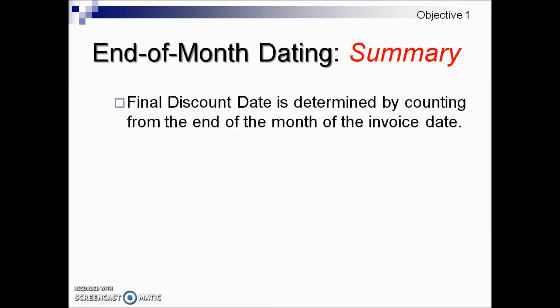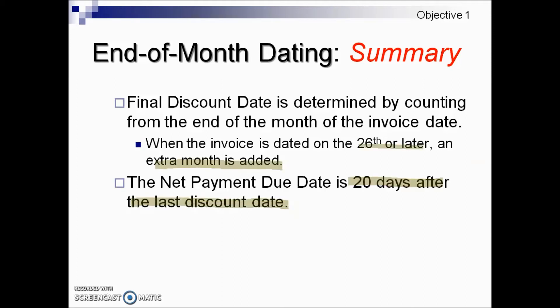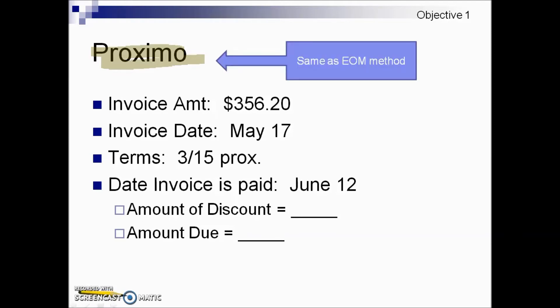In summary, the final discount date is determined by counting from the end of the month of the invoice date. If the invoice is dated the 26th or later, you skip the next month — in other words, you add an extra month. Should no net payment due date be given, you add 20 days to the last discount date. Proximo is handled the same way as EOM.